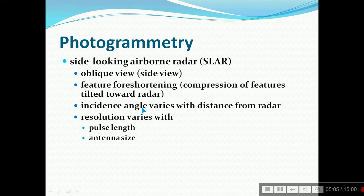SLAR, that is side-looking airborne radar, or SAR, has an oblique view, a side view. Feature foreshortening is there because compression of features is tilted towards the radar. Incidence angle varies with distance from radar, and resolution varies with pulse length and antenna size.